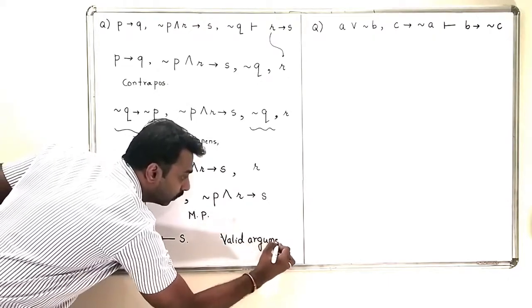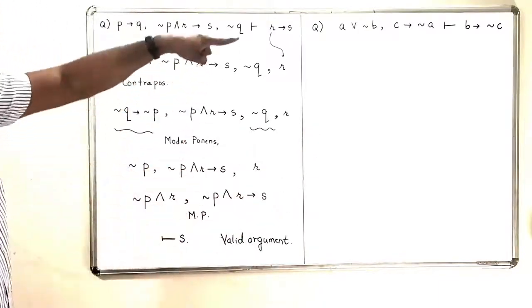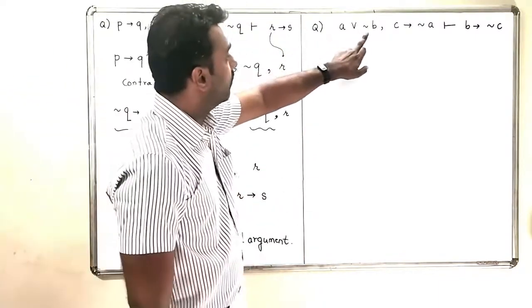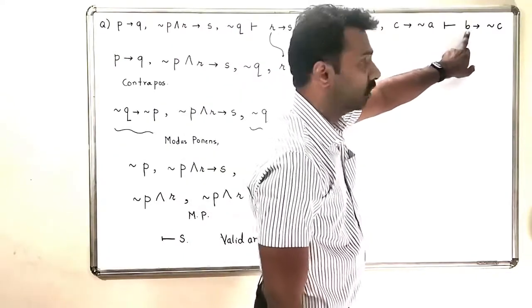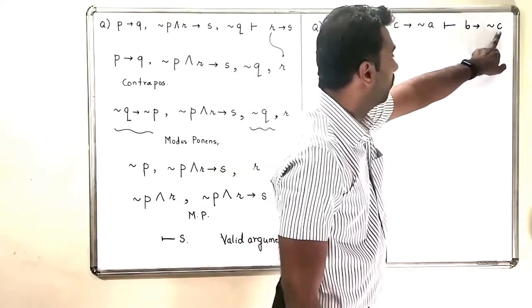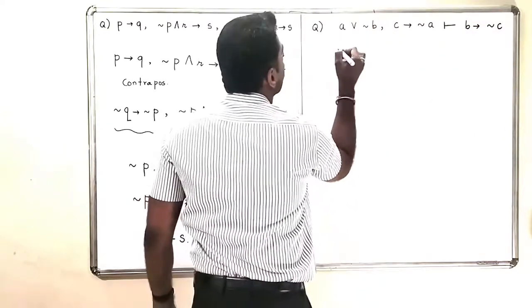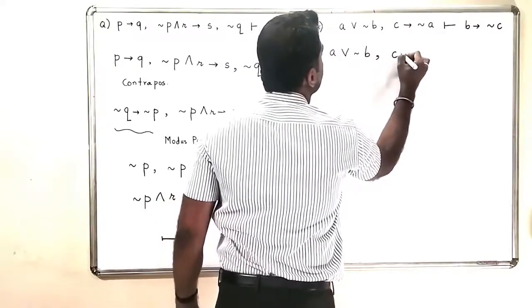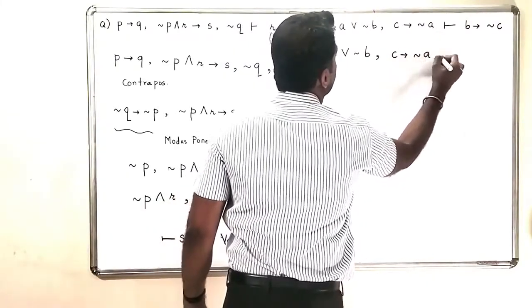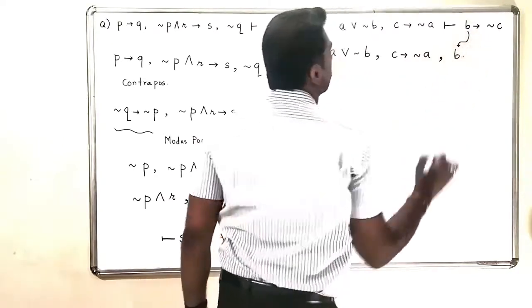Let us go to the second now. So, I have A or negation B, C implies negation A. And I am going to assume B and I am trying to see whether it comes up to negation C. So, I will write it as A or negation B with C implies negation A, and I am going to include this B also in the assumptions.